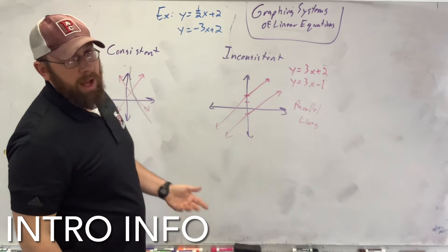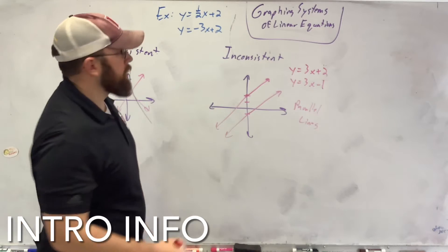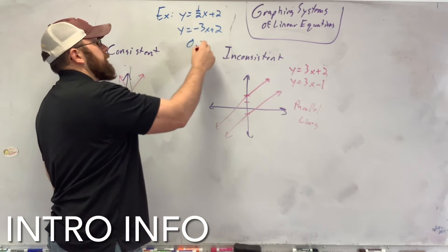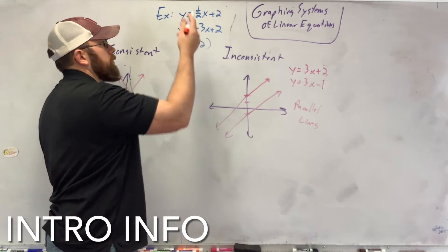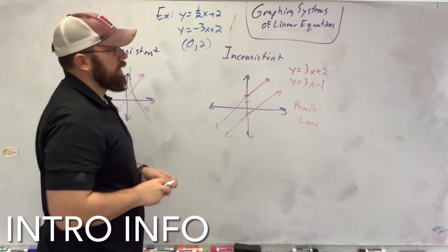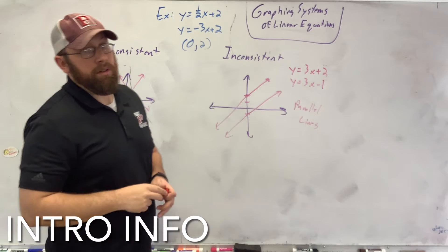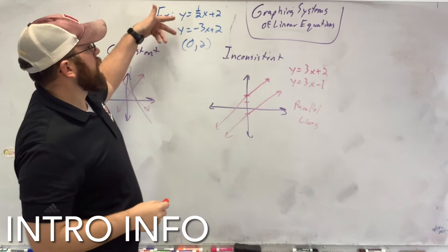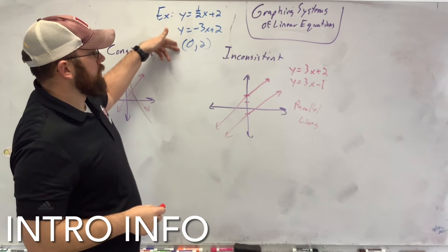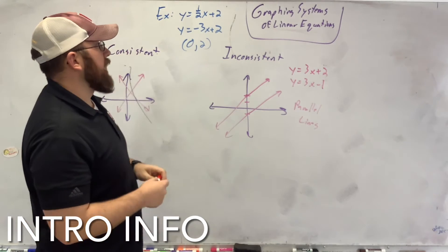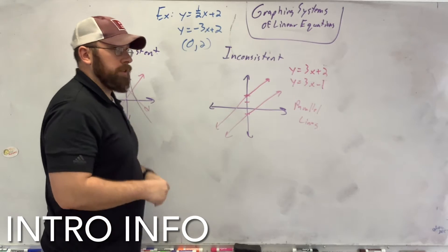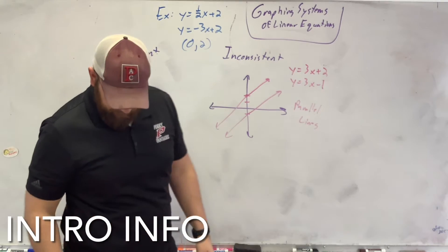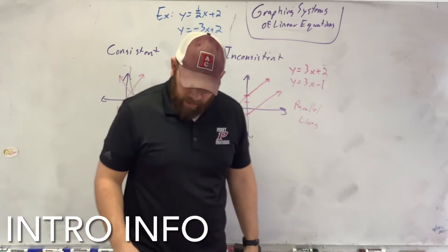When I graph those, their point of intersection would be at (0, 2). When I graph them, there's one answer — it's not all real numbers or anything like that.